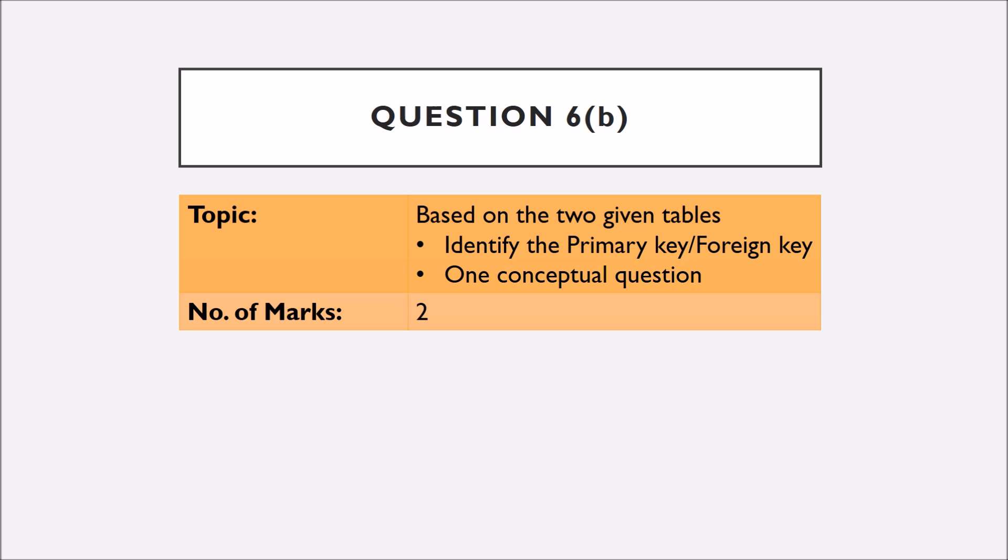Question number 6, Part B is based on 2 given tables. You have to identify the primary key or foreign key and one conceptual question comes on this topic and you have to answer it suitably.